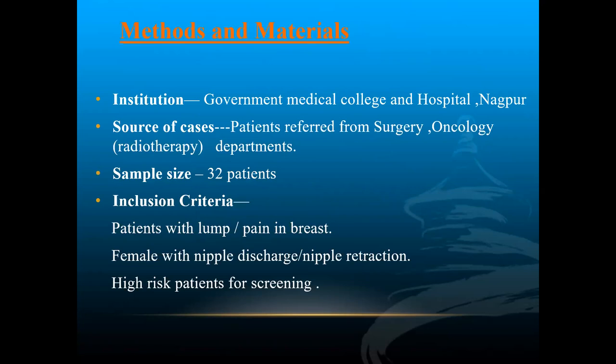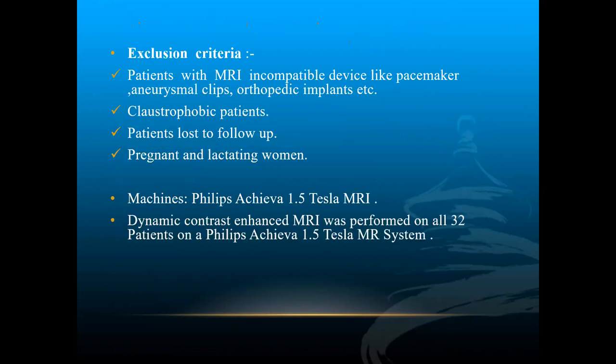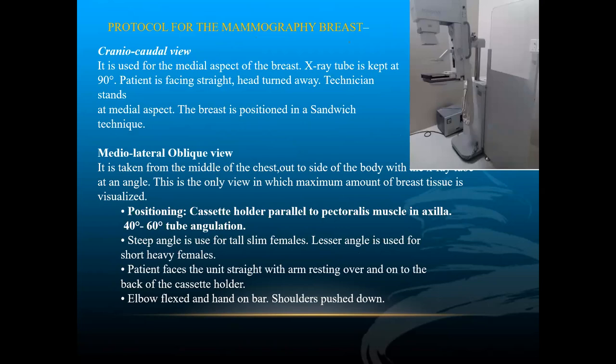This study was conducted at GMC Nagpur. The source of cases included surgery, radiotherapy, and oncology patients. The sample size is 32 patients. Inclusion criteria: patients with lump and pain in the breast, nipple discharge, nipple retraction, and high-risk screening patients. Exclusion criteria: MRI incompatibility, post-operative cases, patients lost to follow-up, and pregnant or lactating women.